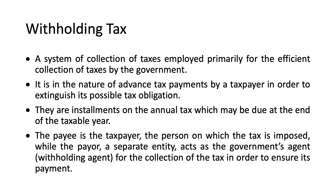There are two parties to withholding taxes. The payee, who is the taxpayer, is the person on which the tax is imposed, while the payor is an entity who acts as a government agent — called the withholding agent — for the collection of the tax in order to ensure its payment. It is actually the payee or the taxpayer who earns the amount, but the withholding agent is required by law to withhold the payment of taxes from the amount to be received by the taxpayer. It is the payer who is required to remit the withholding tax to the government.